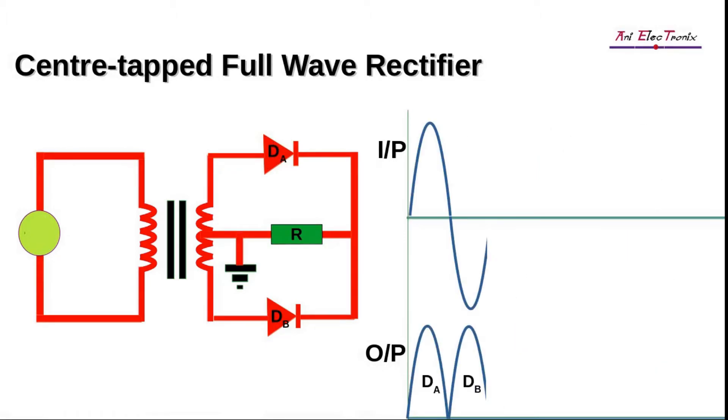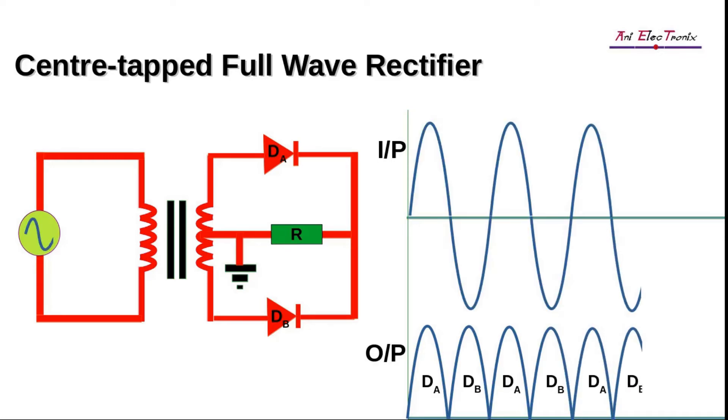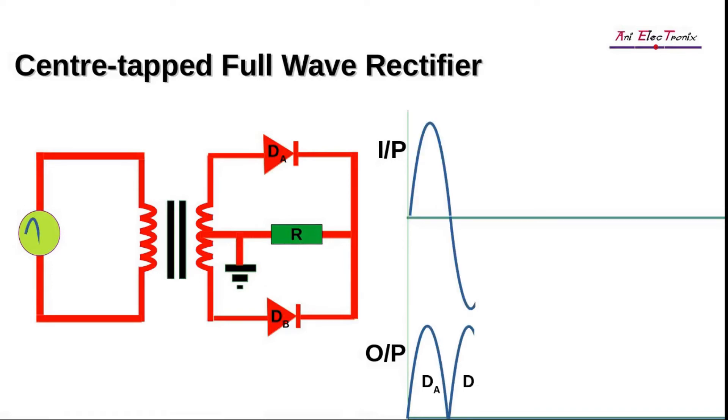We can see that for both the positive and negative input cycles, the output voltage has the same polarity. Nevertheless, the output DC voltage is not constant and it is pulsating.